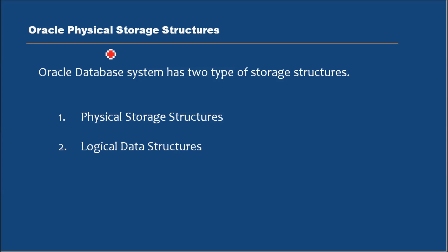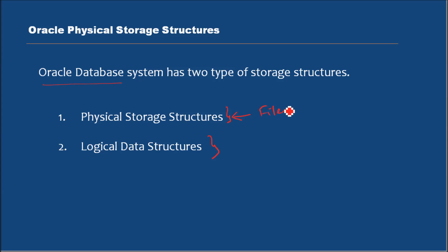So when we install an Oracle Database System, what really happens? What gets stored? An Oracle Database System has two types of storage structures. One is physical storage structure, and the second one is logical storage structure. The physical storage structure comprises all the files that get stored or created at the OS level — the operating system level. Logical data structures are the objects that you would see once you log into the database. I will explain both.